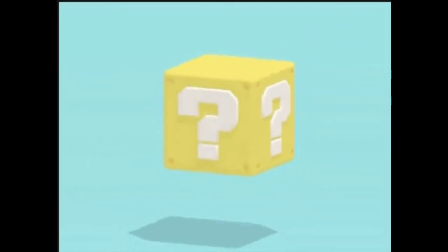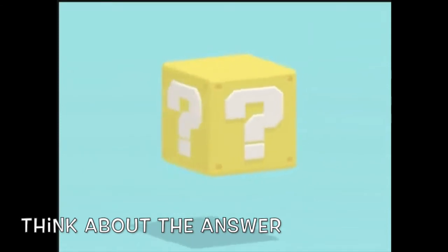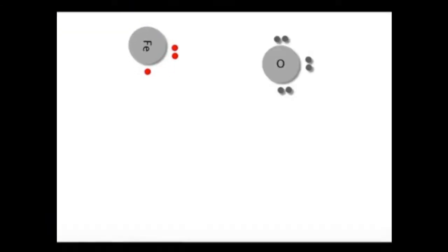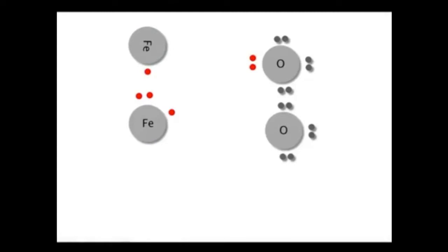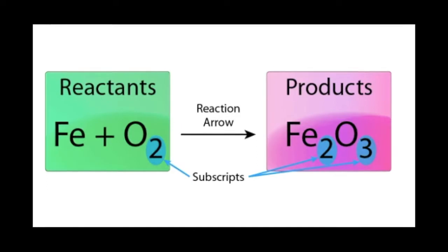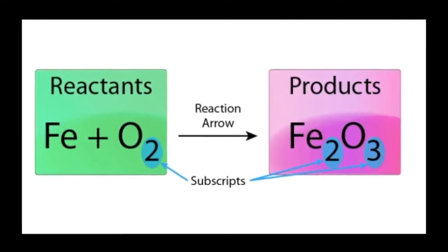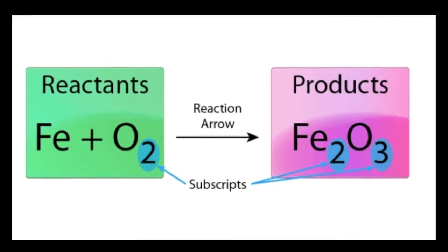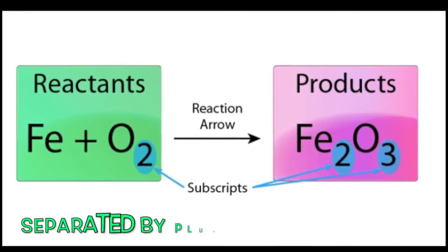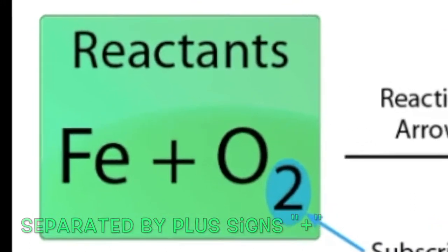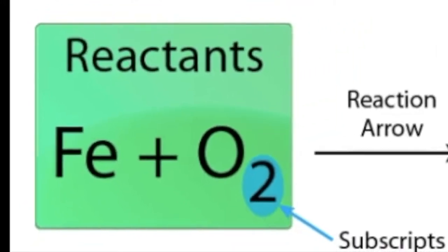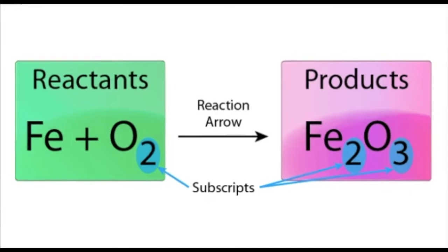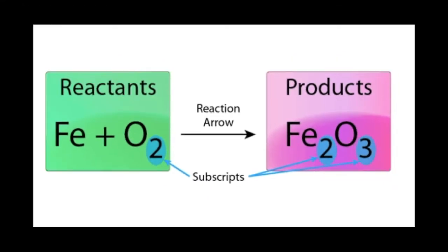What is the general equation for the reaction in which iron rusts? Iron combines with oxygen to produce rust, which is the compound named iron oxide. This reaction is represented by the general chemical equation: iron plus oxygen yields iron oxide. When there are more than one reactant, they are separated by plus signs, and if more than one product is produced, plus signs appear between them as well.